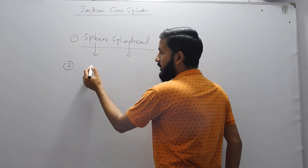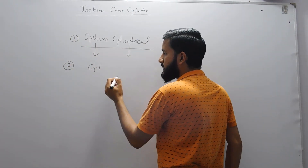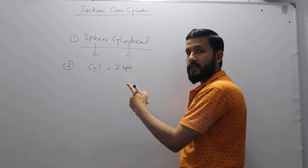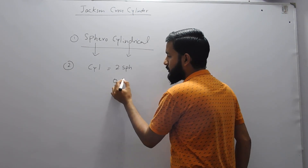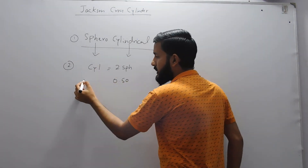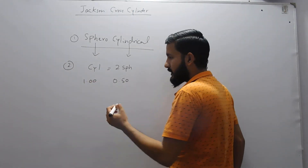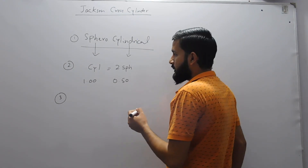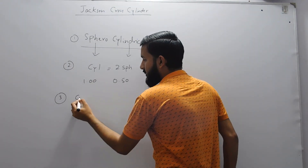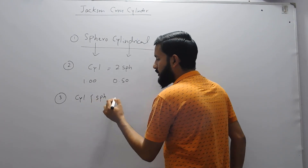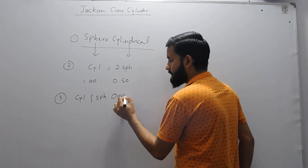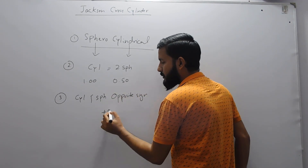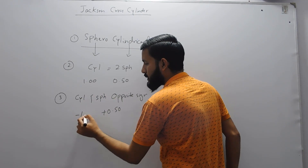The second point is that the power of the cylinder is double that of the sphere. It means that if the spherical lens is of 0.50 then the cylindrical lens will be 1. The third important point in the definition is that the cylinder and sphere are of opposite sign.